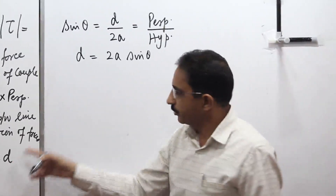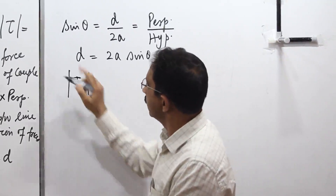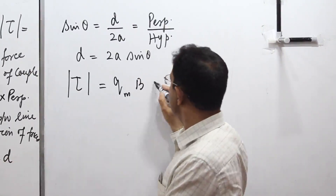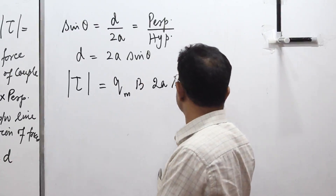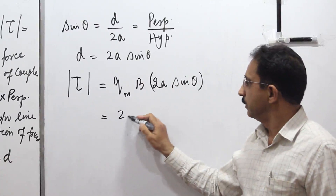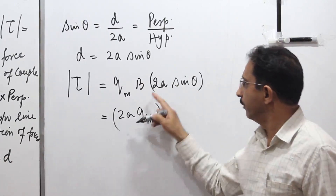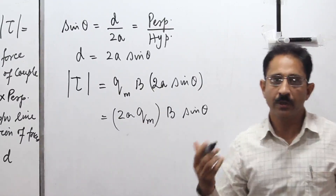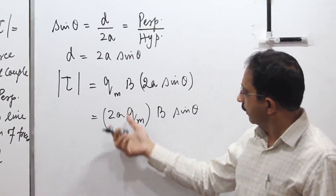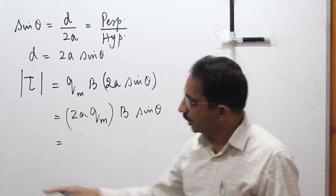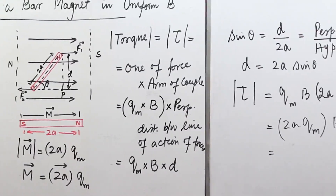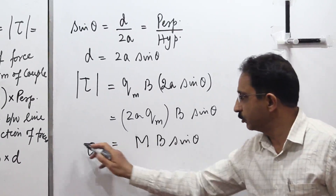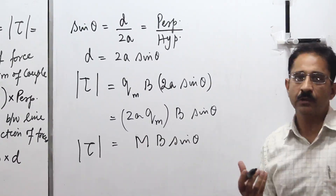Substituting d = 2a sin theta into the torque expression: magnitude of torque = qm × B × 2a sin theta. This gives the product 2a × qm, which is the pole strength multiplied by the distance between the poles — that is exactly the magnetic dipole moment M. Therefore, the magnitude of torque equals M × B × sin theta.